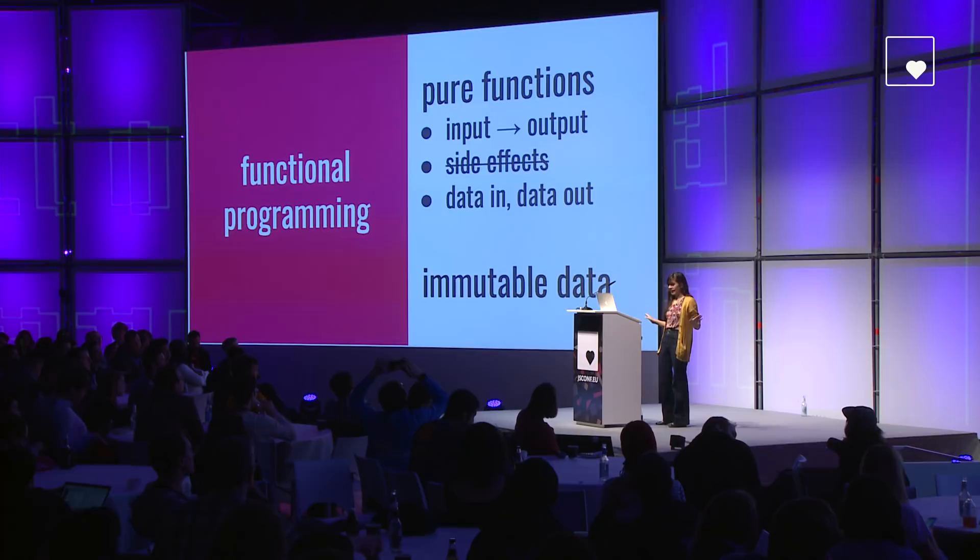One thing that goes hand-in-hand with this avoidance of side effects is using immutable data. Immutable data, meaning once we've created it, it never changes. This is a really good way to avoid accidentally changing something outside of your function. If everything's immutable, you can't change anything. So immutability is another thing that rocks.